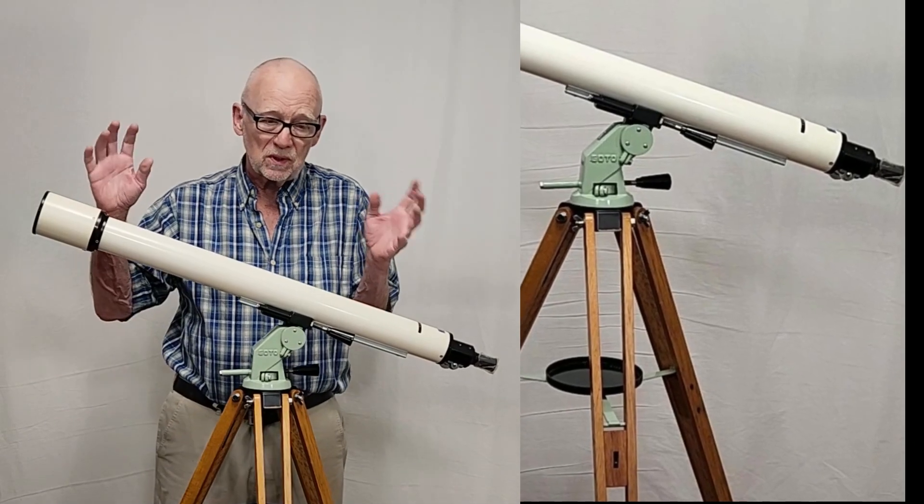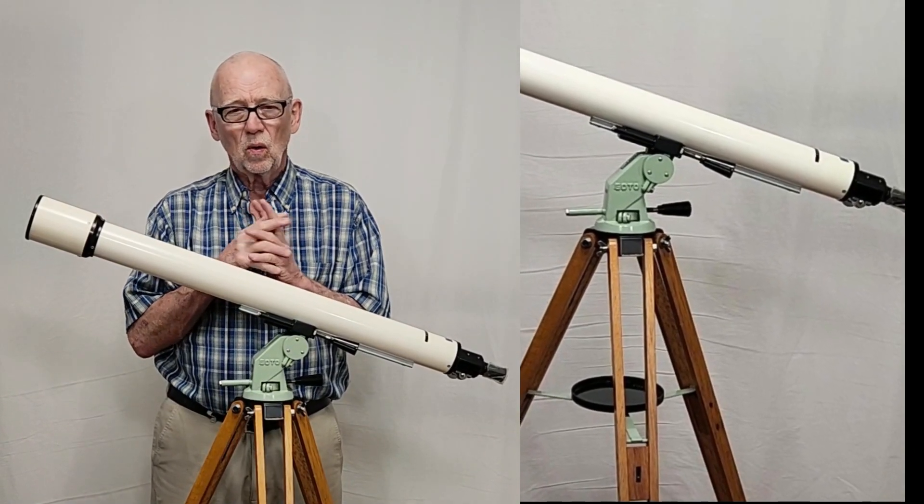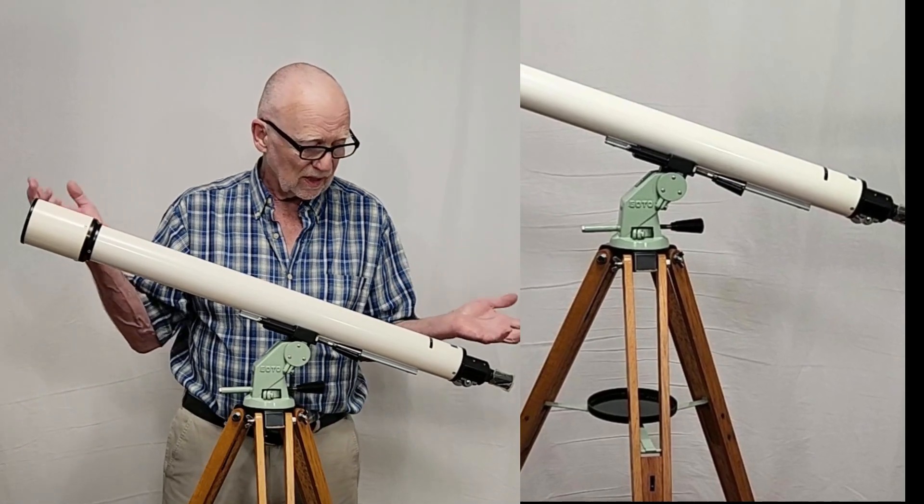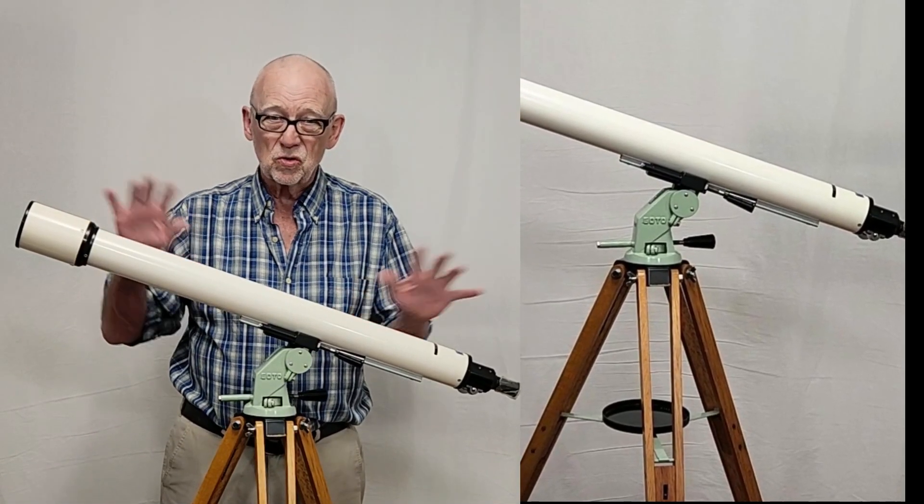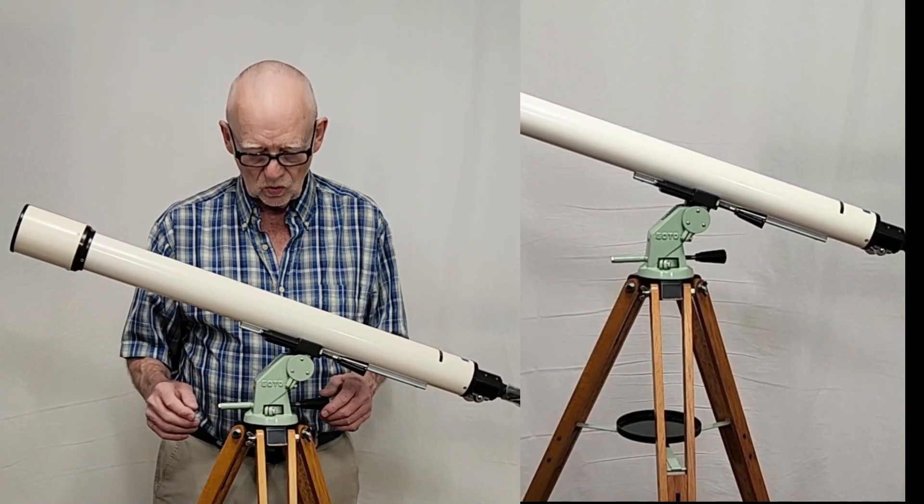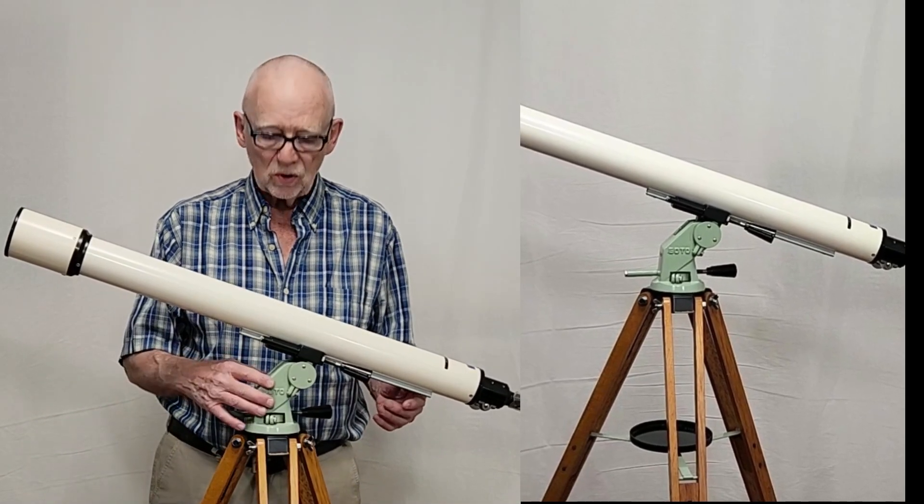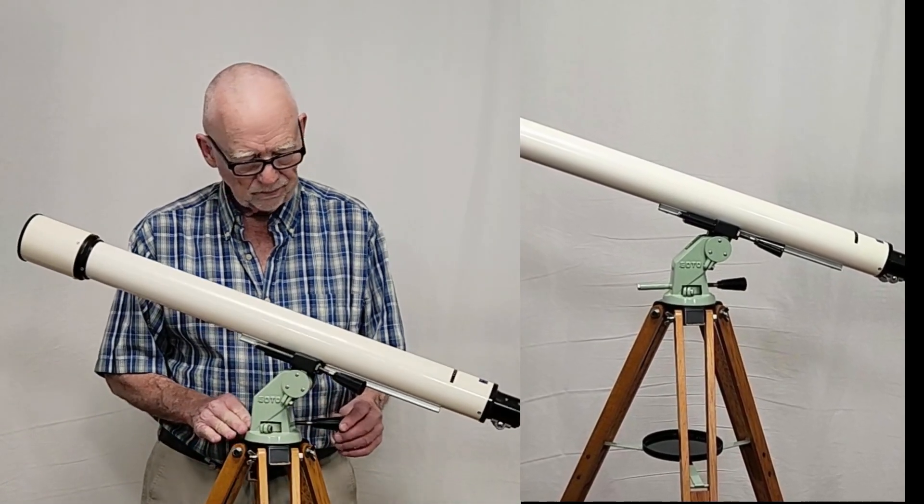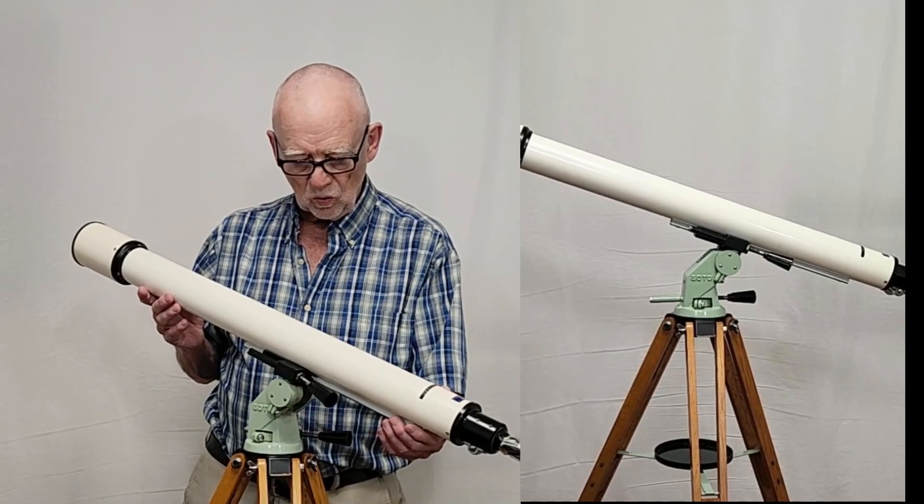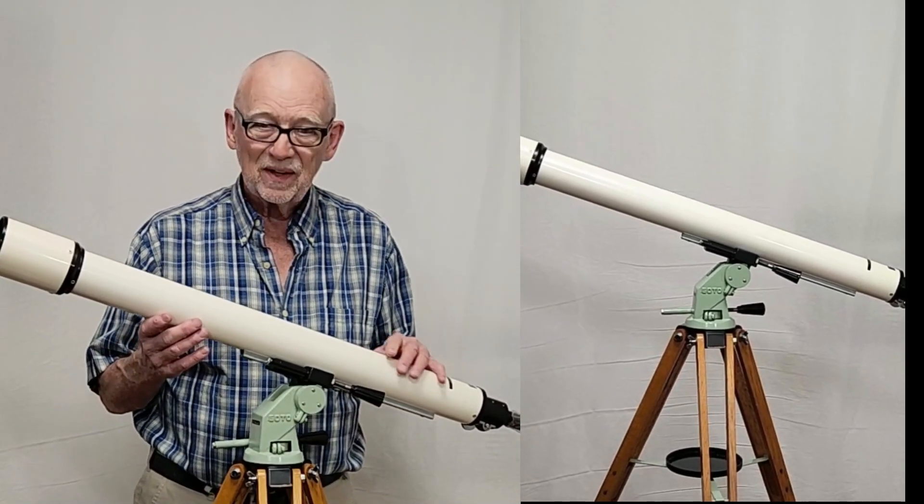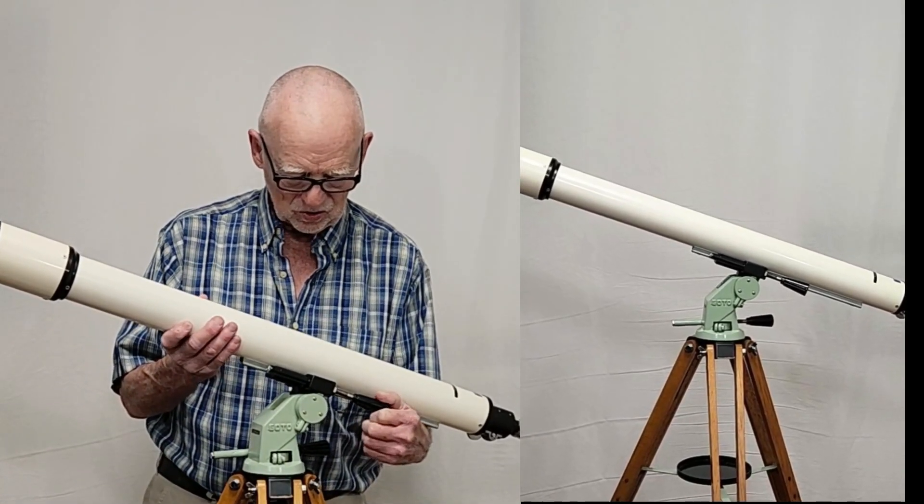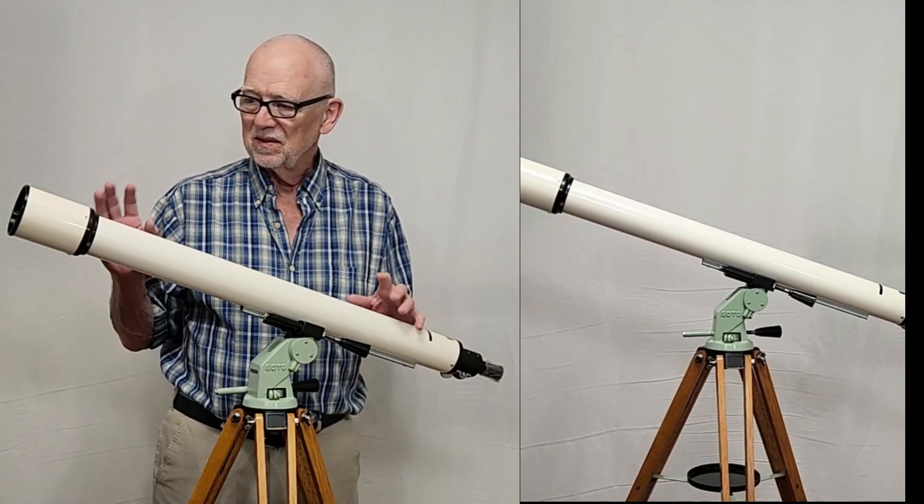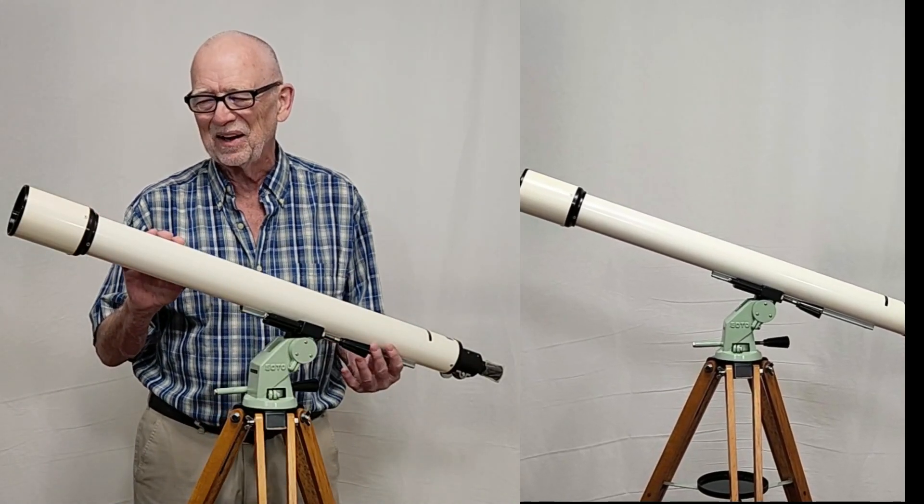Now school telescopes, in the case of the Japanese school telescopes, were more or less sponsored by the state and designed to be distributed to schools and used in schools. Gotoh kind of had an exclusive on that. This telescope is one of those, and it's got some really interesting features that tell you about that.